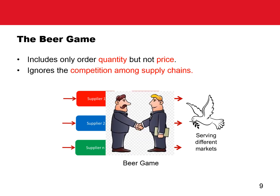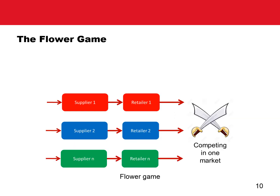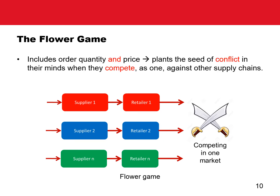The supply chains in the beer game are not competing, but serving different markets. The flower game, on the other hand, includes both order quantities and price in the transactions between the trading partners. Thus, it effectively plants the seed of conflict in the minds of the partners when they compete as one team against other supply chains. Isn't this real life?